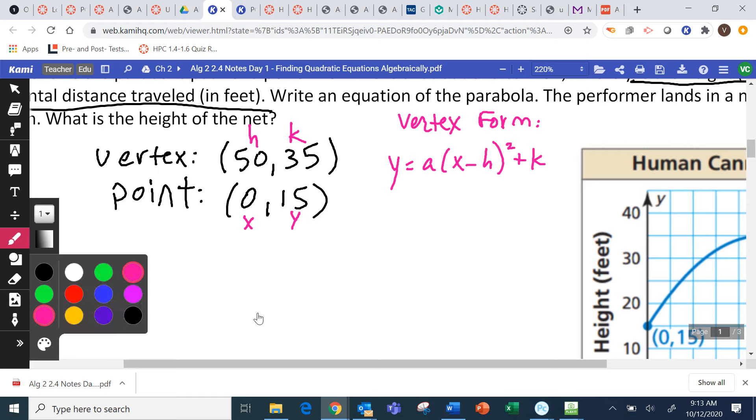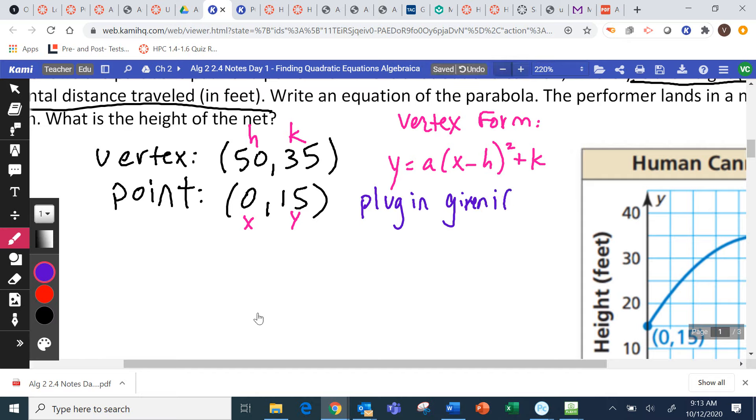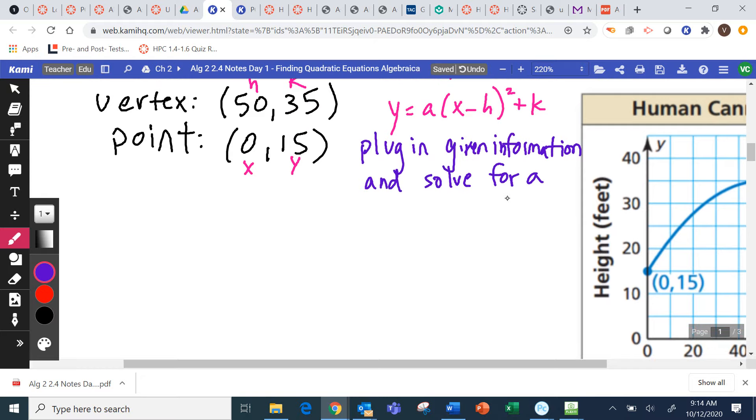Okay, so what we have to do now is we're going to plug in given information and solve for A. So our Y value is 15 equals A. We don't know. Then we've got an X value of 0 minus an H value of 50. Close the parenthesis, squared plus a K value of 35. So you copy that entire equation over. You just leave A as the unknown. And then we're going to solve this for A.